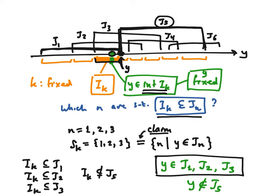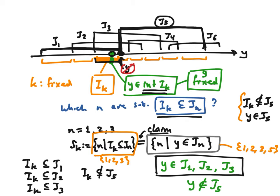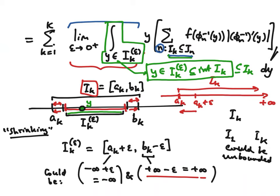Because y is in the shrunken interval i_k_epsilon and thus in the interior of i_k, it's not going to be one of these endpoints. So the condition 'i_k is inside j_n' is equivalent to the condition 'y belongs to j_n', and this equivalence allows us to replace the k-dependent condition with a condition that only depends on y. That's why we did this shrinking process — to make sure the y value is not one of these shared endpoints.